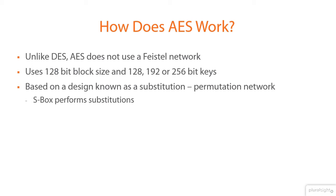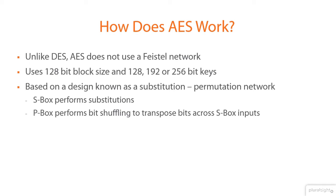A Substitution Box, or S-Box, is a basic component of symmetric key algorithms which perform substitutions. In block ciphers, they are typically used to obscure the relationship between the key and the ciphertext, and an S-Box is typically implemented as a fixed lookup table. A Permutation Box, or P-Box, is a method of bit shuffling used to transpose bits across an S-Box's inputs. In block ciphers, the S-Box and the P-Box are used to make the relationship between the plaintext and the ciphertext difficult to understand.